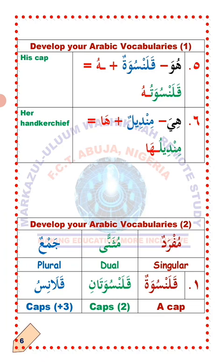Mufradun — singular. Muthanna — dual. Jamu — plural. Mufrad is a word in Arabic that represents only one. Muthanna means only two. Jamu represents more than two, from three upward. Wahid, number one: kolansuwa — a cup; kolansuwa — two cups; kolanis — more than two cups from third upward. La'allaka fahimt? I hope you understand. MashaAllah.